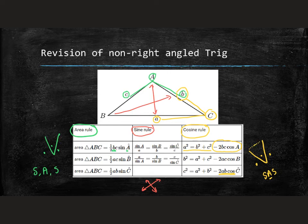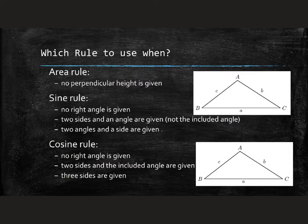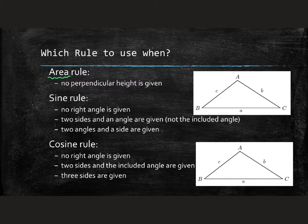You've practiced these in grade 11, but we need more practice as we manipulate 2D and 3D triangles. Let's ask: which rule do we use when? First, if the question asks for the word 'area,' it's probably the area rule — but more importantly, it applies when we don't have a perpendicular height. For the area rule, we need a side, an angle, and another side.